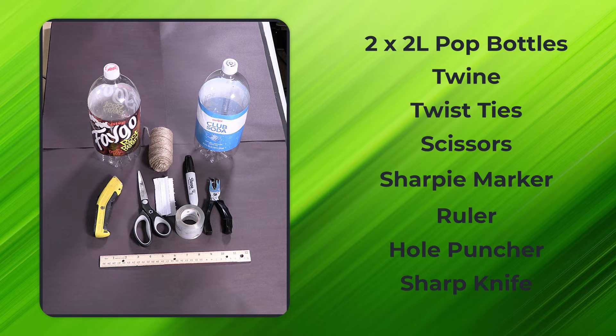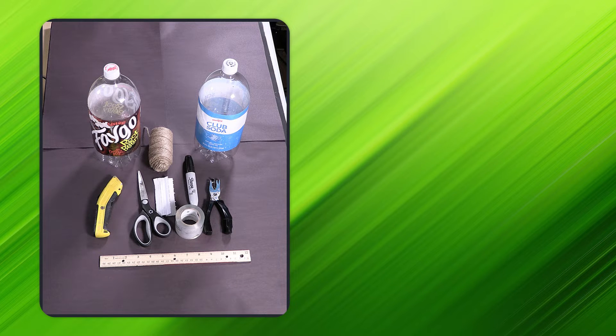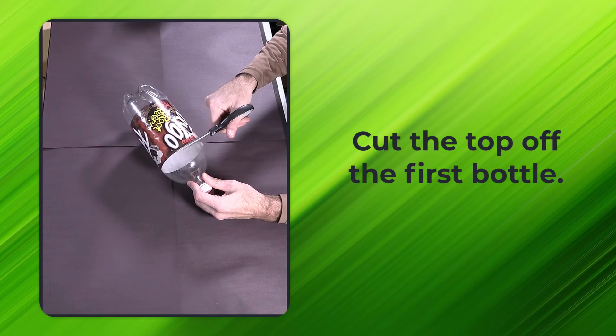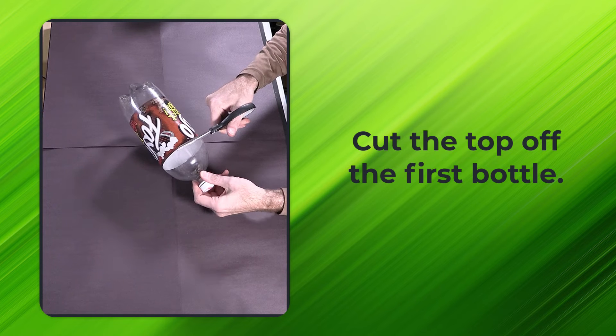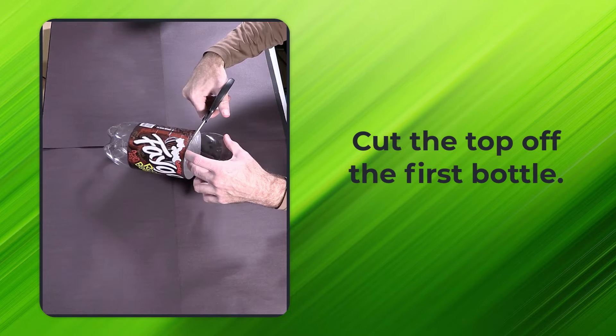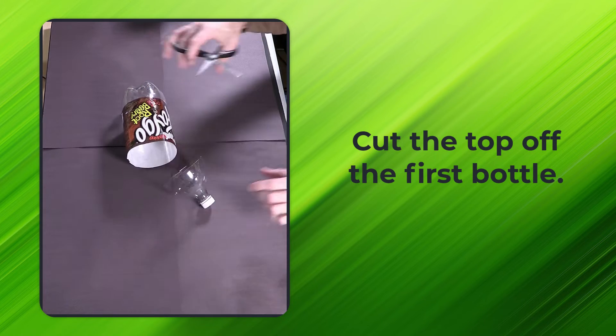Once you have your supplies, it's time to get cutting. To start, cut the top off the first bottle, using the top of the label as a guide. For these cuts, you might find it easier to make an initial incision with your knife than to complete the cut with your scissors.